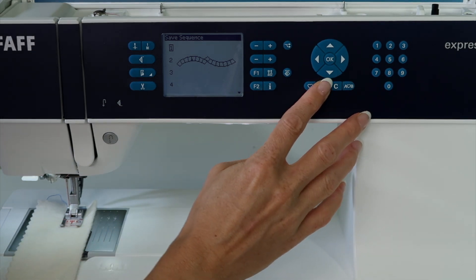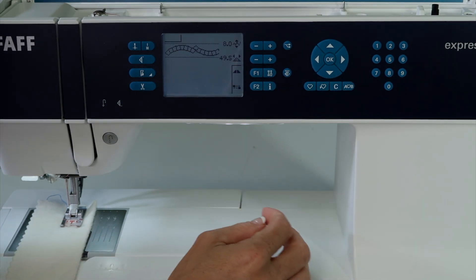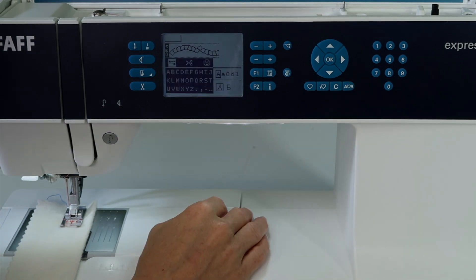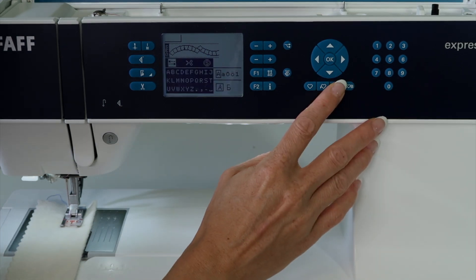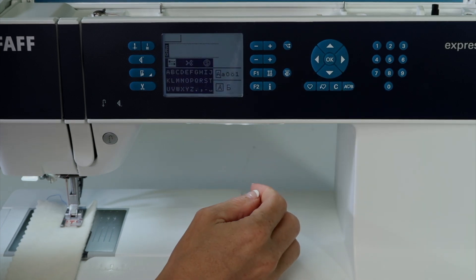Touch that little heart with the arrow pointing into it to get out of the saved sequenced area. If you want to put another combination of stitches in, go back to the sequencing area and clear that out.